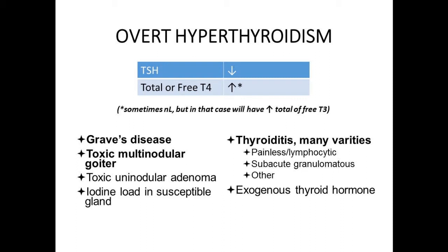The top causes of hyperthyroidism: in younger folks it's Graves; in folks over 50-60, it's usually one or more overactive nodules, though I've seen everything in every age group. Iodine load in susceptible glands — this can happen after a cath or CT scan. Folks who are susceptible, maybe with a brewing nodule where TSH has been around 0.8, can develop impressive hyperthyroidism the next morning after an iodine load. For the rest of us with normal glands, the Wolff-Chaikoff effect prevents that. This is rare but interesting.